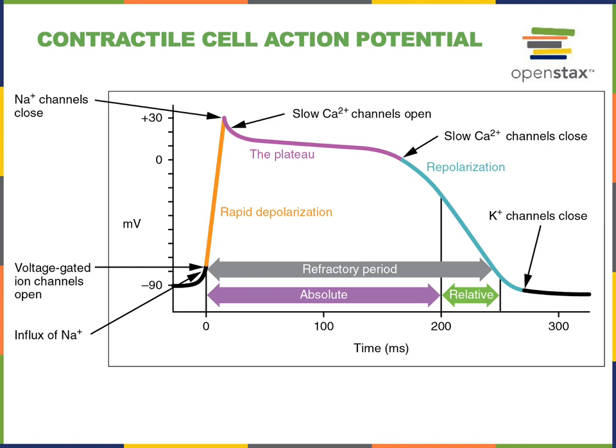As the voltage-gated calcium channels close and the membrane potential becomes negative again, repolarization is sufficient to de-inactivate the voltage-gated sodium channels, ending the absolute refractory period. After about 200 milliseconds, we enter a relative refractory period — a time when triggering another action potential is more difficult because voltage-gated potassium channels are still open. The relative refractory period ends as those channels close, returning to the resting membrane potential.